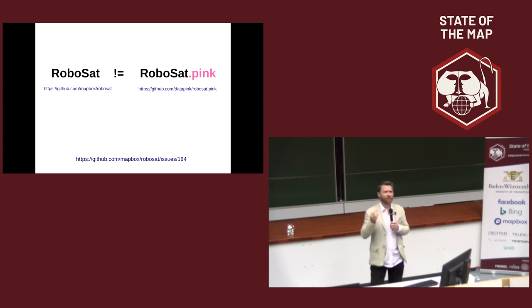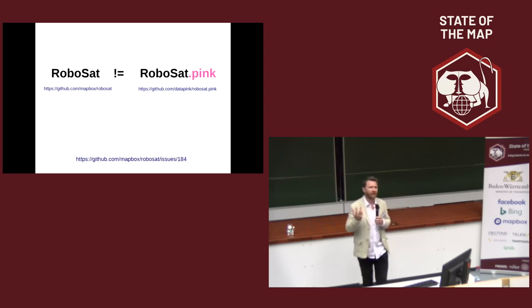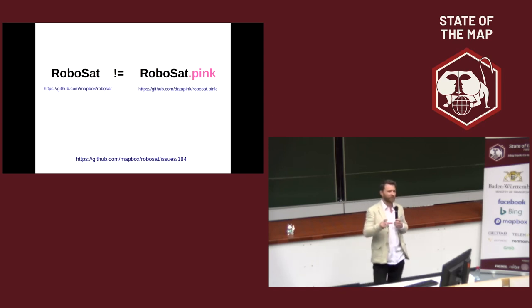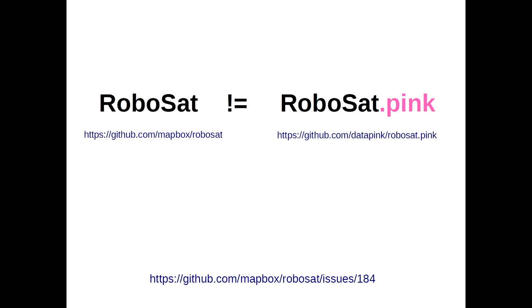One thing: names matter. Names matter because there are in fact two projects — RoboSat and RoboSat.pink. If you want to have any further information about the why and the how, there is a link with a description related to that.